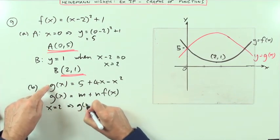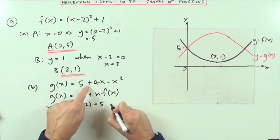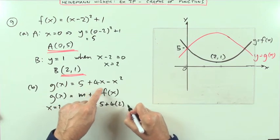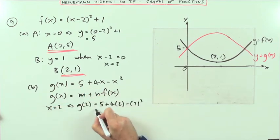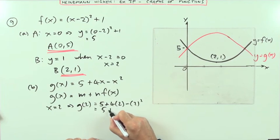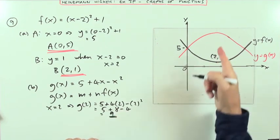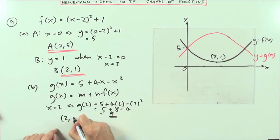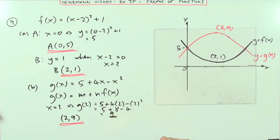So if x equals 2, that means g of 2 is going to be 5 plus 4 lots of 2 minus 2 squared. So that's going to be 5 plus 8 minus 4, which is 9. So the turning point here is going to be (2, 9).